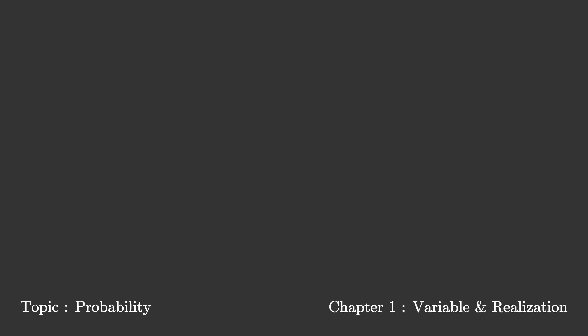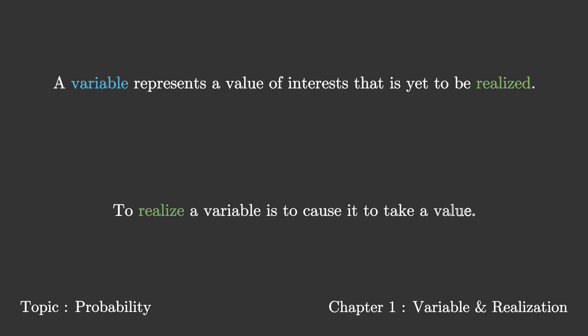You might have learned the concept of variables from middle school. So what does a variable actually do? A variable represents a value that is yet to be realized. To realize a variable is to cause it to take a value either by assigning or making an observation.